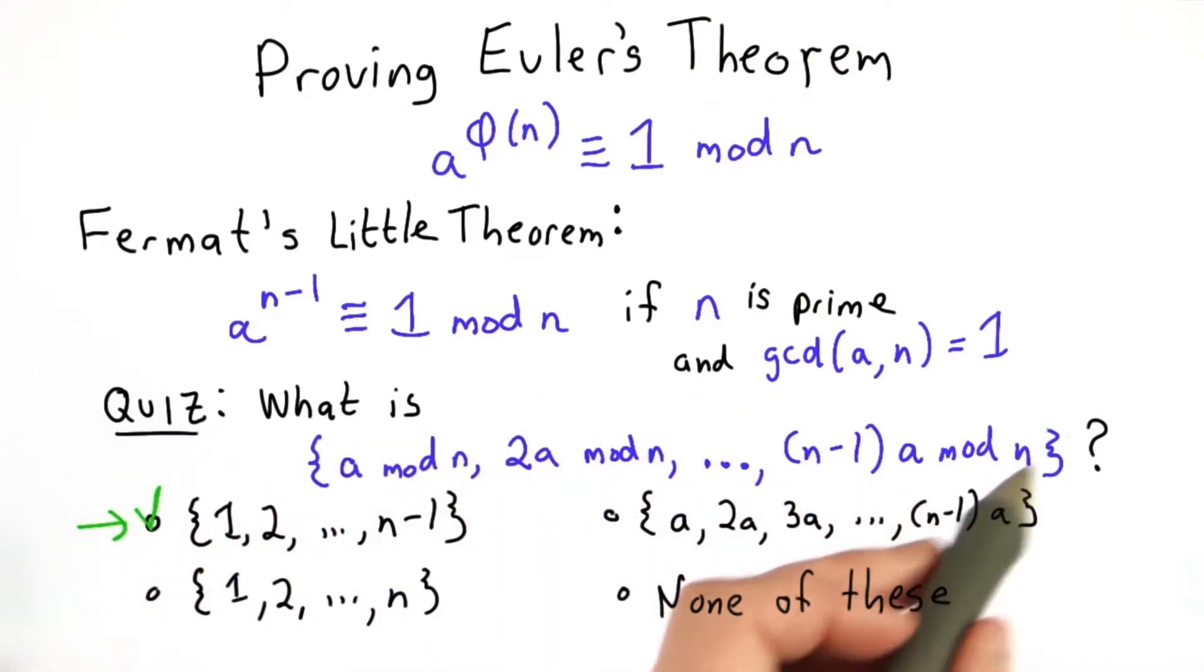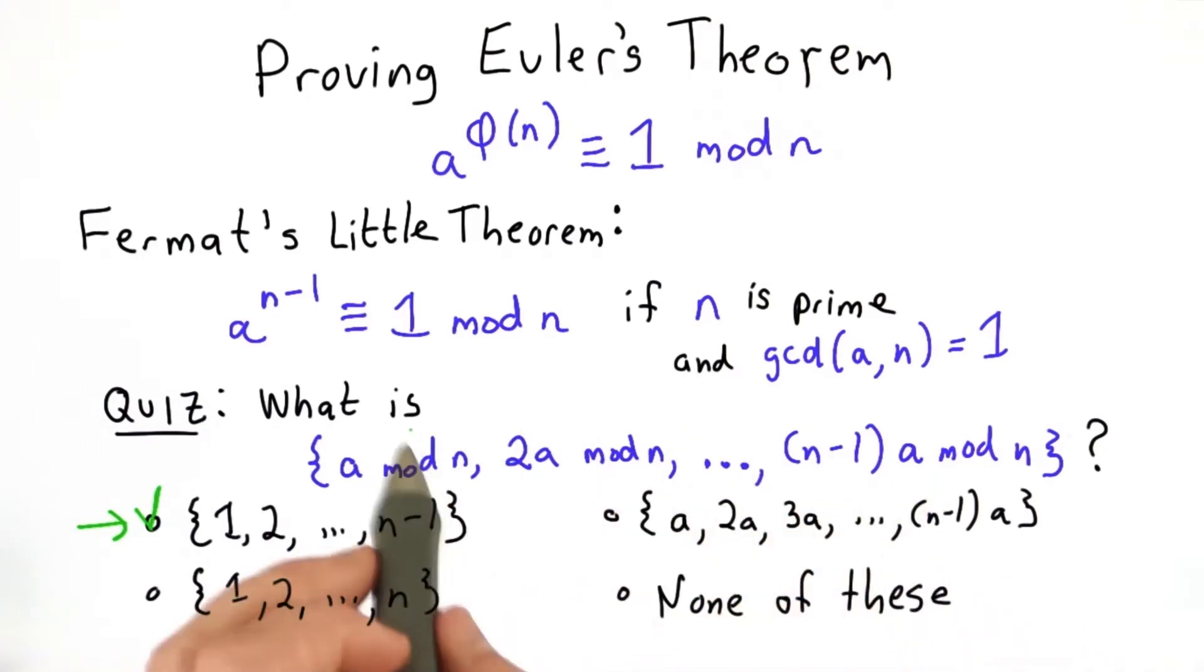So that means this will generate the numbers 1 through n minus 1 in some order, some permutation of those, but since it's a set, it's the same as the set 1 through n minus 1.